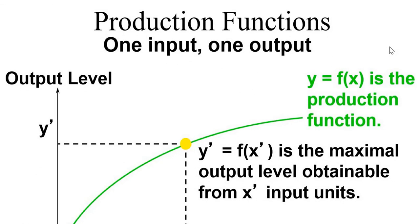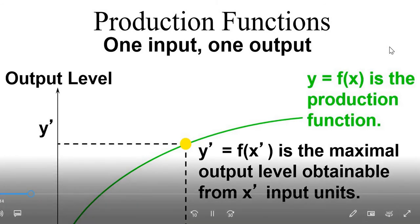Production function with one input and one output, shown on the screen where the x-axis shows the input levels and the y-axis shows the output level. y = f(x) is the maximum output level obtained from x input units. All points on the production function, shown with the green line, are the maximum output level.